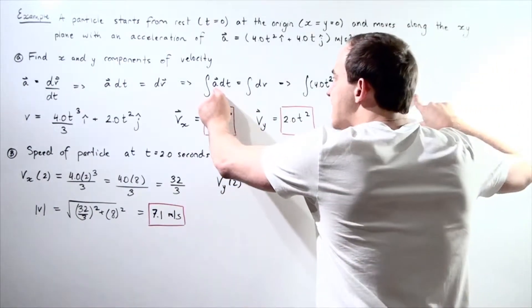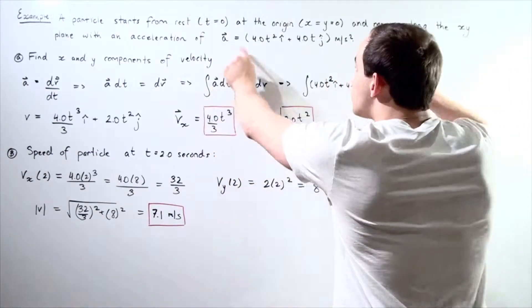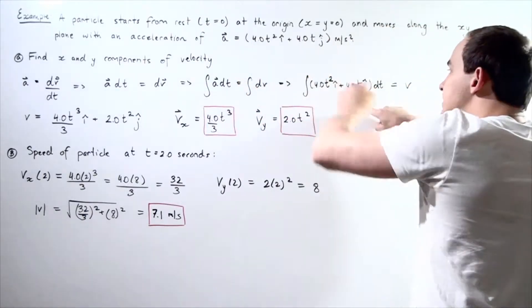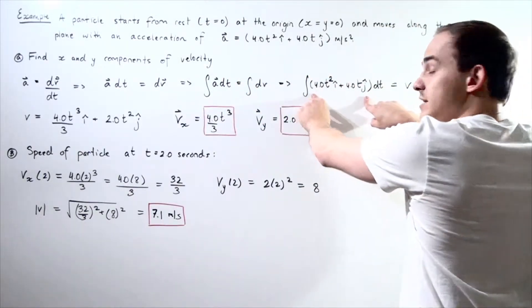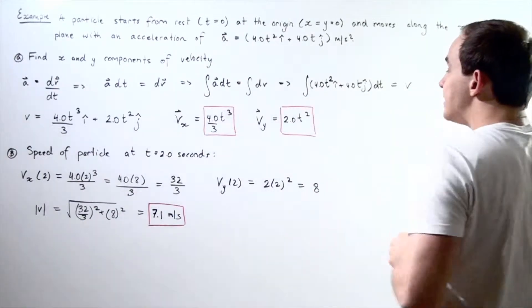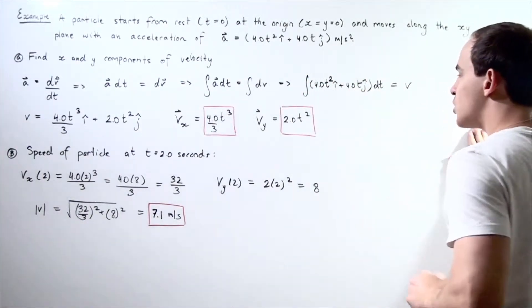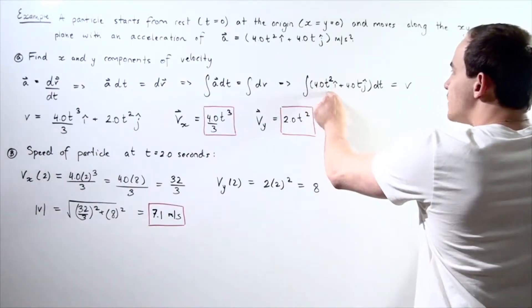Likewise, notice that this a can be replaced with this equation as we did here. And now taking the integral of this equation, we take the integral of the x component and the integral of the y component. So we get 4.0t squared